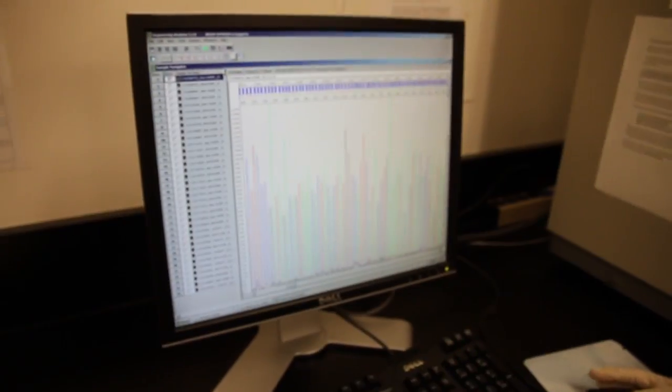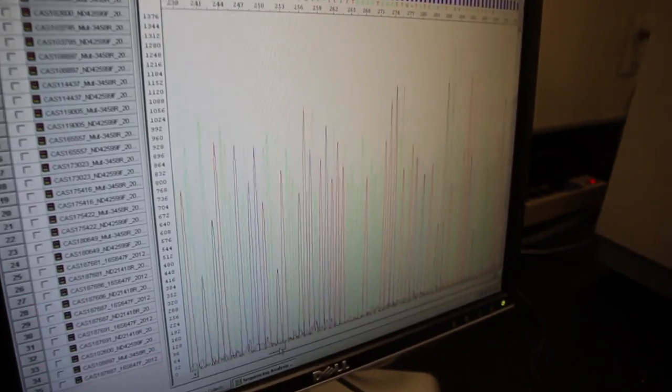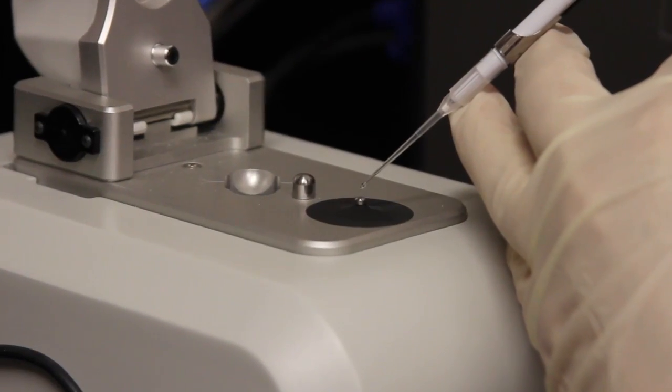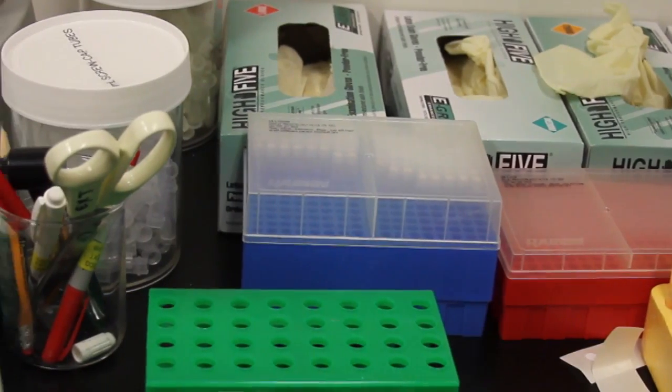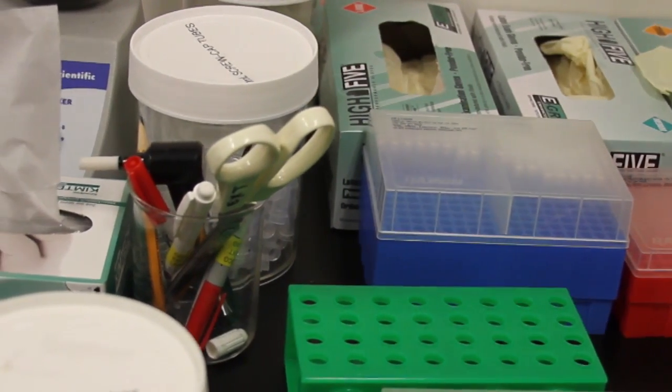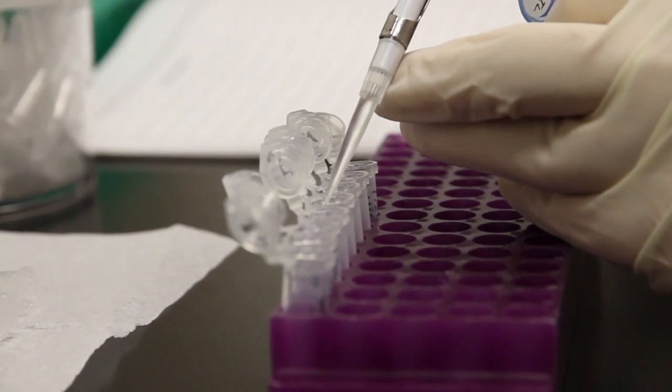Sequencing genes takes about two days, beginning with the tissues of a particular organism. So the first step is we bring in our leaves or feathers or hair or some other tissue into a specific room dedicated to extracting and purifying all of the DNA in the cells in those particular tissues.